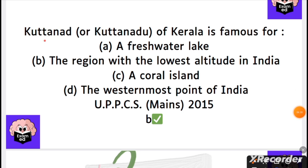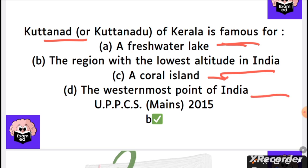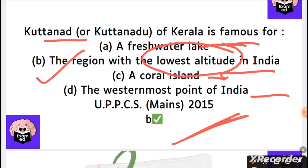The next question is about Kuttanad, Kerala. It is famous as a freshwater lake region. The region is at the lowest altitude in India — not a coral island or the westernmost point. You can underline this in your notes.